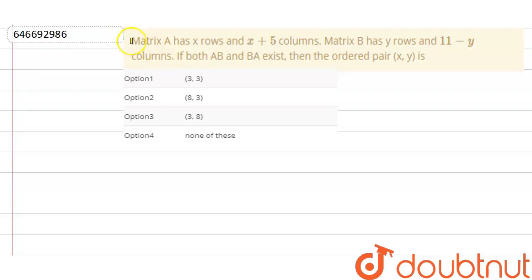Hello everyone, so our question is: Matrix A has X rows and X plus 5 columns. Matrix B has Y rows and 11 minus Y columns. If both AB and BA exist, then the ordered pair (X, Y) is?